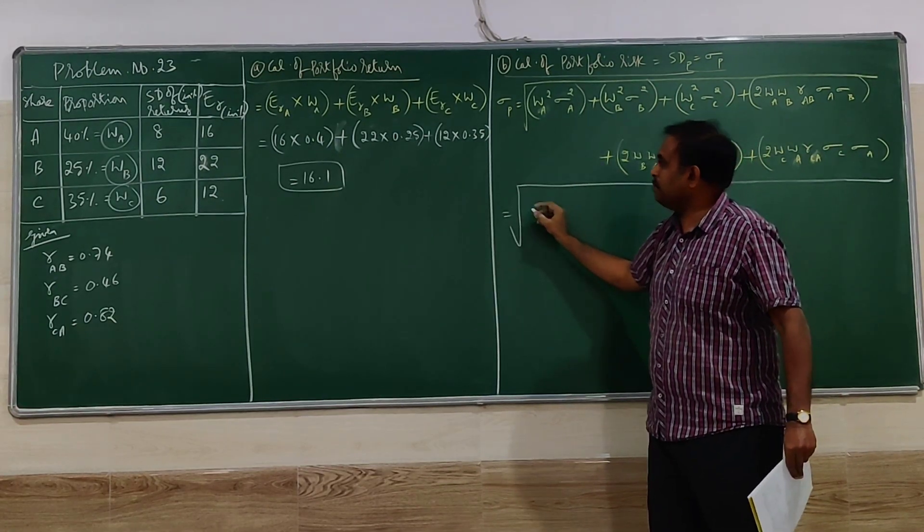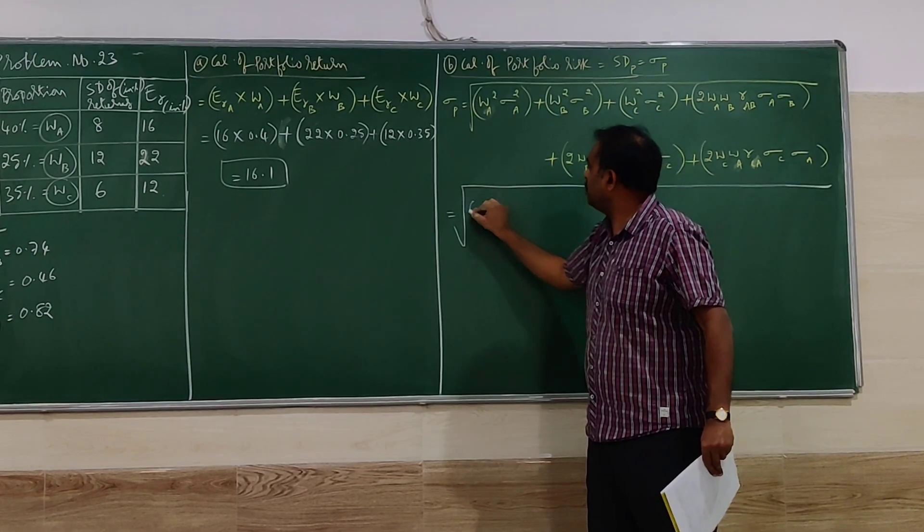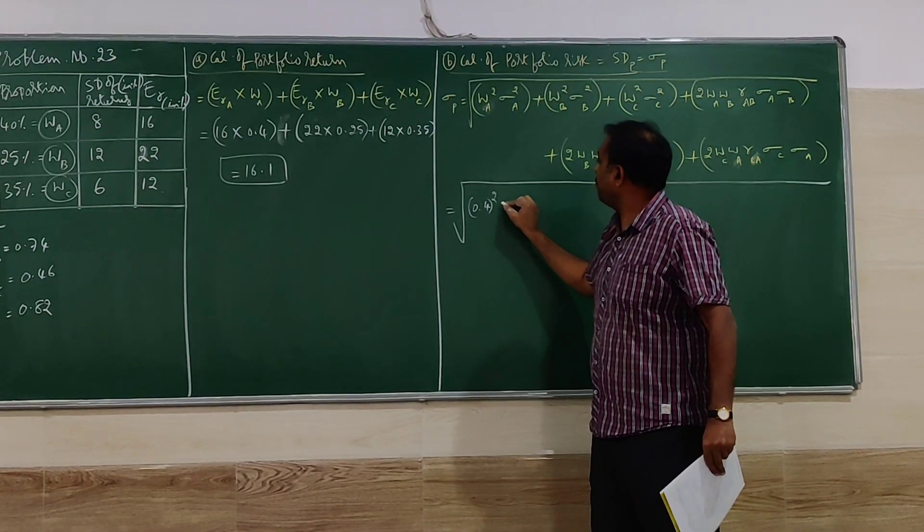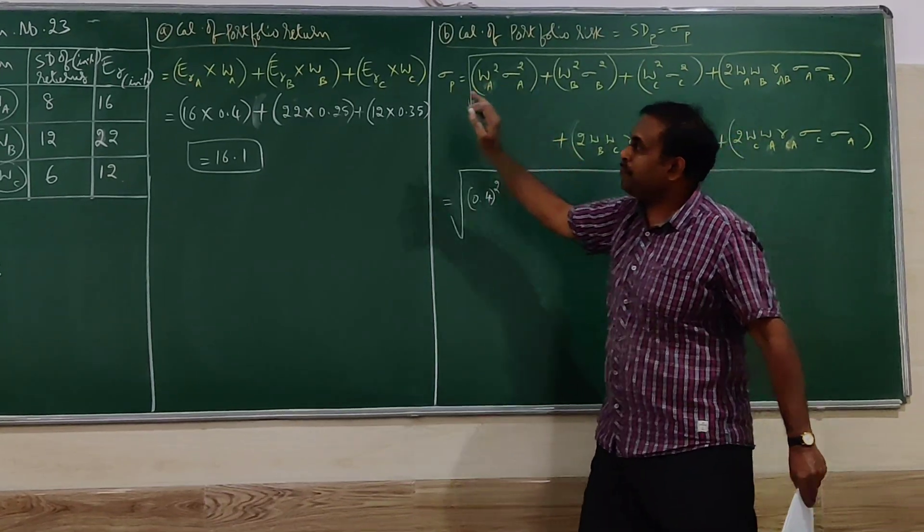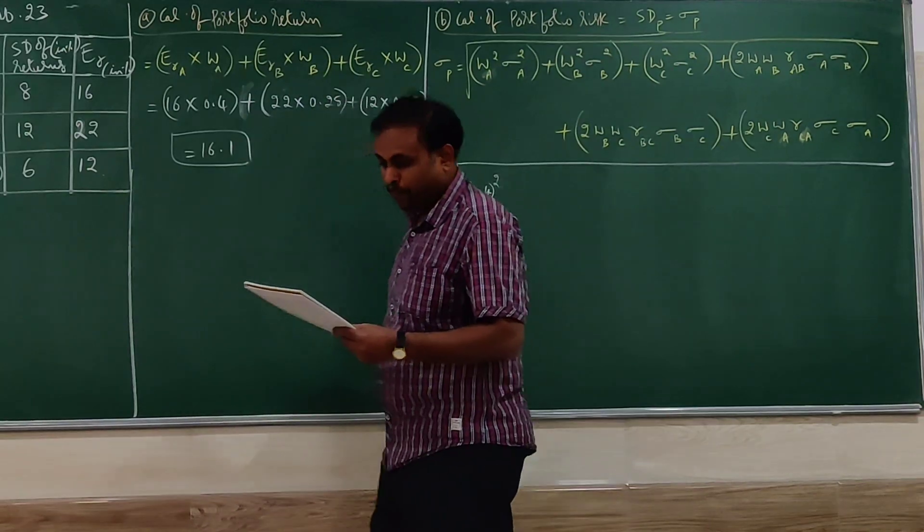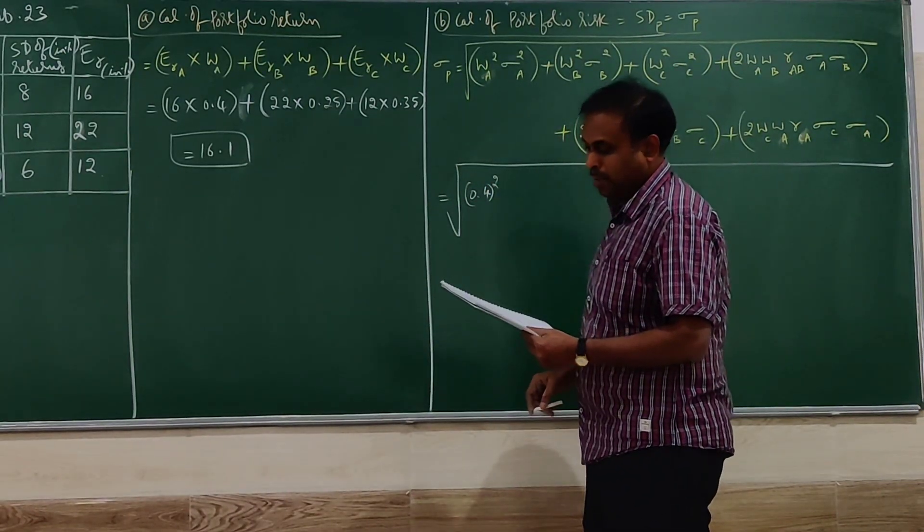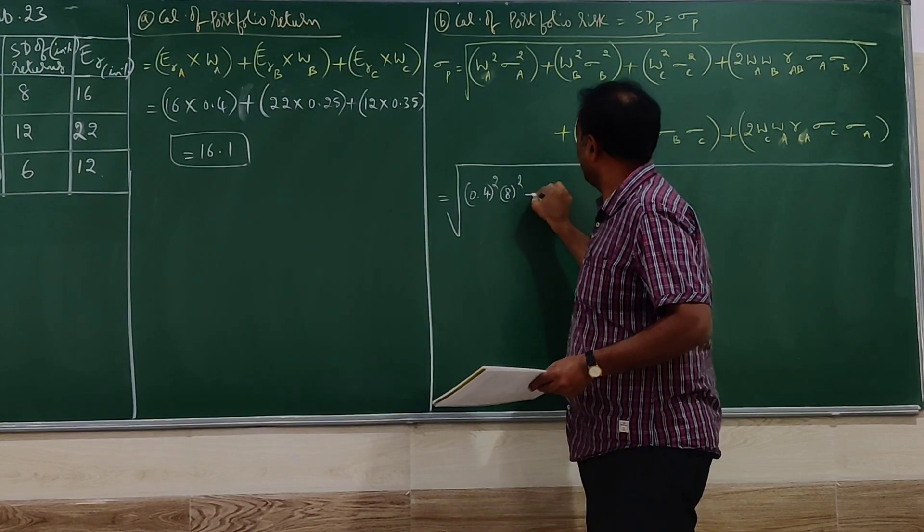Let me go for substitution. Weight of A, 0.4 squared, into standard deviation of A. Standard deviation of A is given as 8, so it is going to be 8 squared plus.